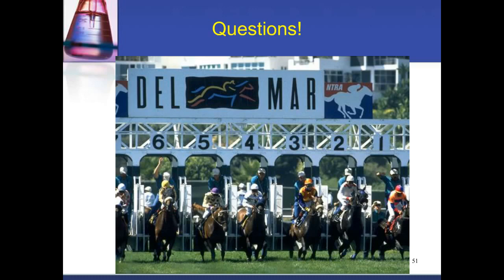Thank you for that informative presentation. Before the Q&A, regarding how equine anti-doping labs differ from human anti-doping labs: there's not a tremendous difference — they use similar technology and approaches. However, in animal drug testing we test for more compounds because there is no therapeutic use exemption. Compounds that humans can get exemptions for are very uncommon in veterinary medicine and certainly not permitted for horses during competition.